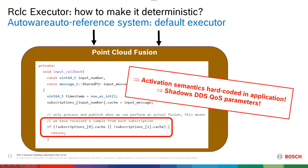What is the problem with this approach? First, you have hardcoded the activation semantics in the application. Second, you shadow the DDS quality of service parameters. For example, if you have 10 messages from one subscription and one from another, you need a local queue of 10 elements in your callback, which shadows the QoS parameters you rely on. Looking to the future where edge-cloud computing relies on real-time communication over QoS, the developer has no direct means to express activation semantics, leading to difficult-to-analyze application code.